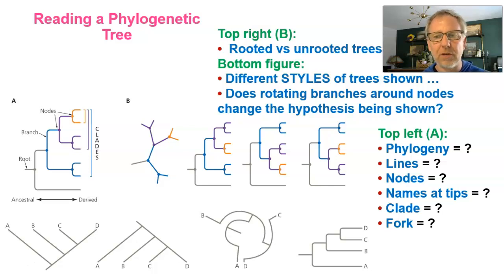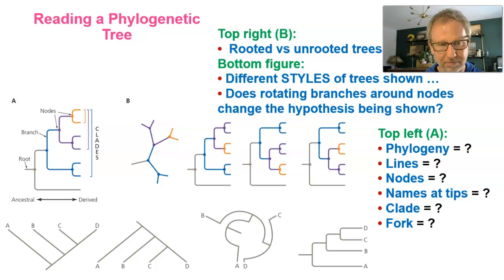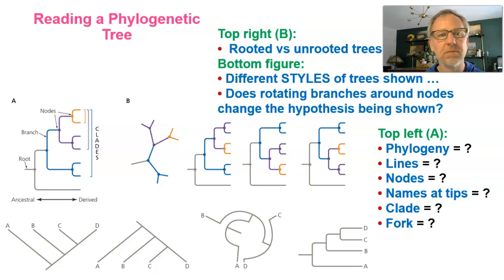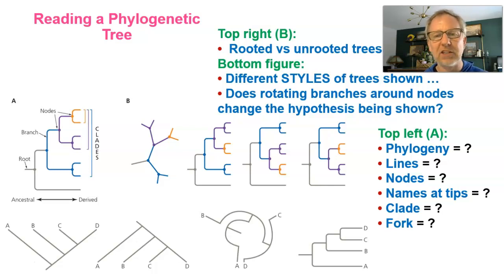Let's get to the question of what a node is. Look at figure A and the arrows pointing to nodes. The nodes are the points where the branches connect — just like on an actual tree where branches connect at what botanists call nodes, forming bigger branches. These nodes represent something very important: they represent shared common ancestors. If you follow two branches down to the node they share, that node represents a common ancestral species that those two branches share.